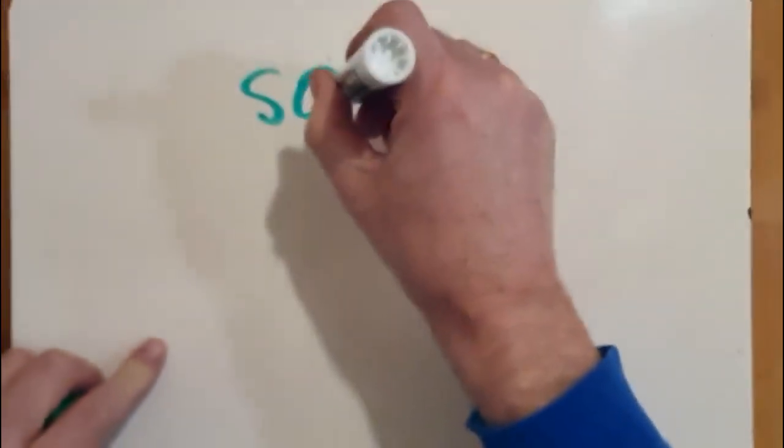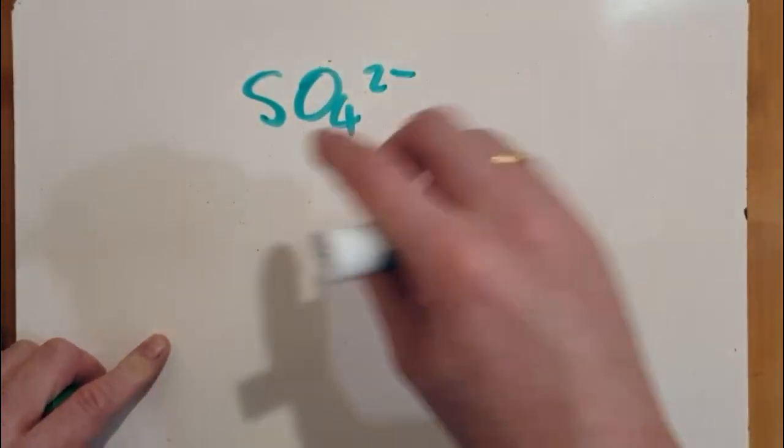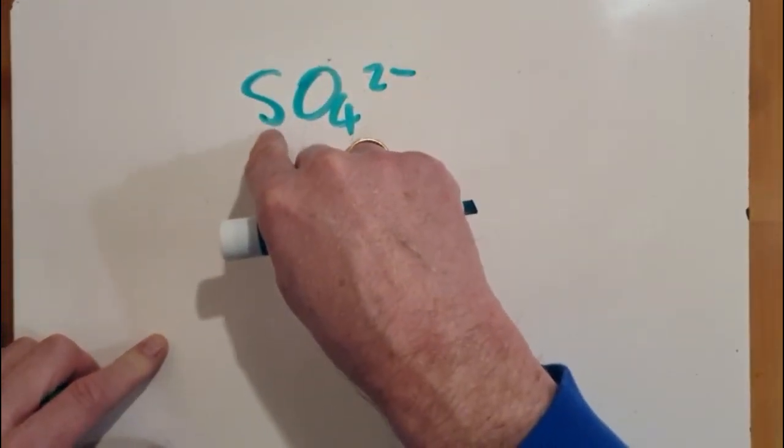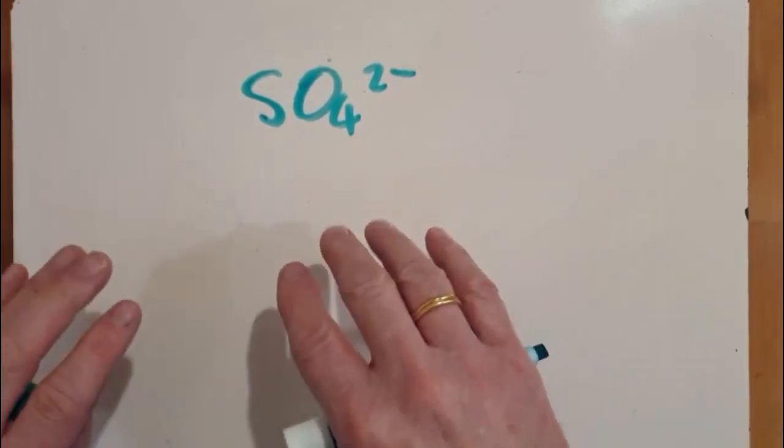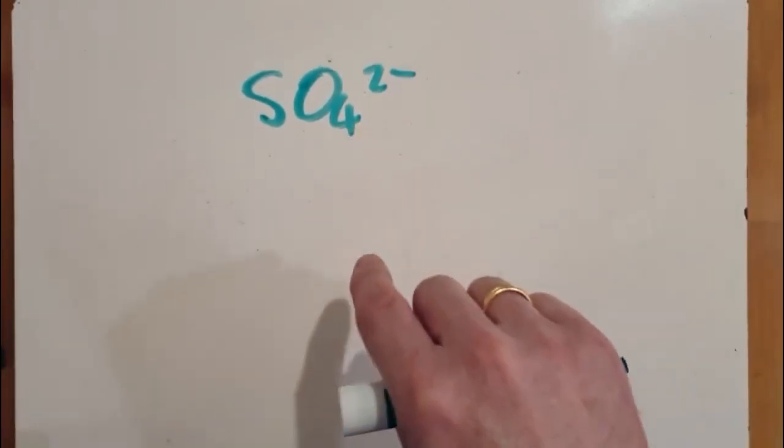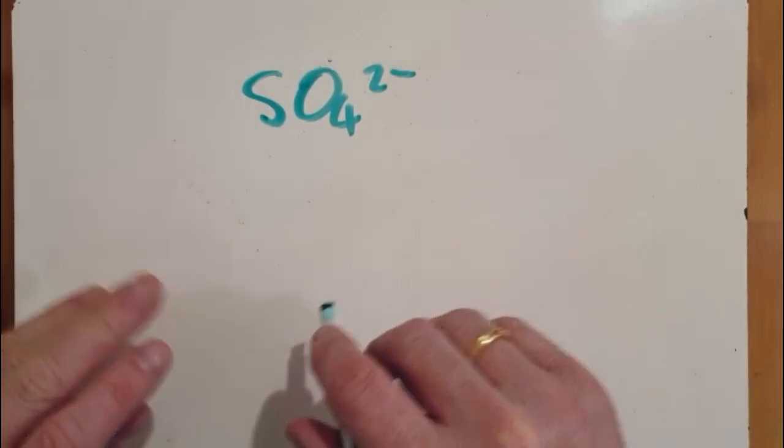Okay, the Lewis structure for the sulfate ion SO4 2-. Now sulfur is stable with a stable octet with eight electrons, but in this case it's going to have 12 electrons around it to be stable, the so-called expanded octet.